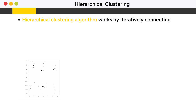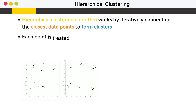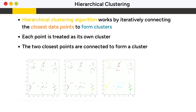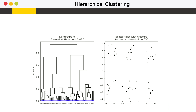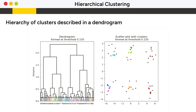The hierarchical clustering algorithm works by iteratively connecting the closest data points to form clusters. Initially, all data points are disconnected. Each point is treated as its own cluster, and the two closest points are connected to form a cluster. This process continues until all data points are connected into a single cluster. Hierarchical clustering forms a hierarchy of clusters described in a dendrogram.